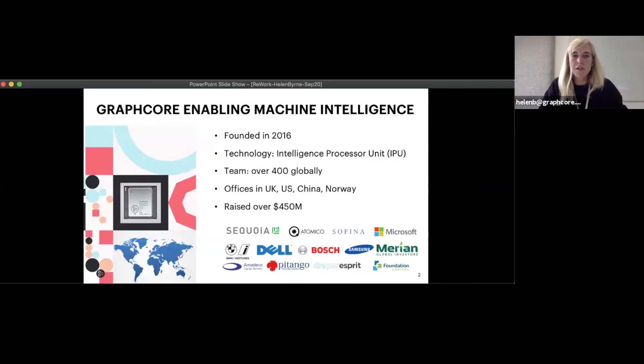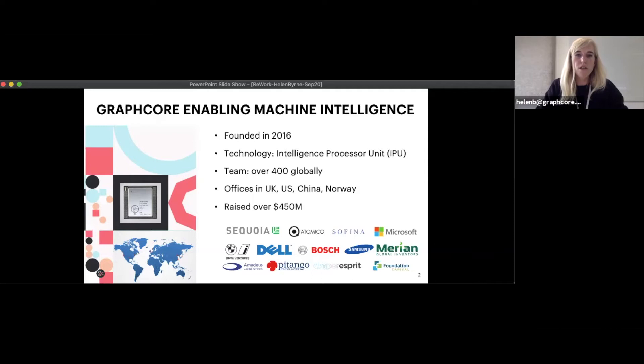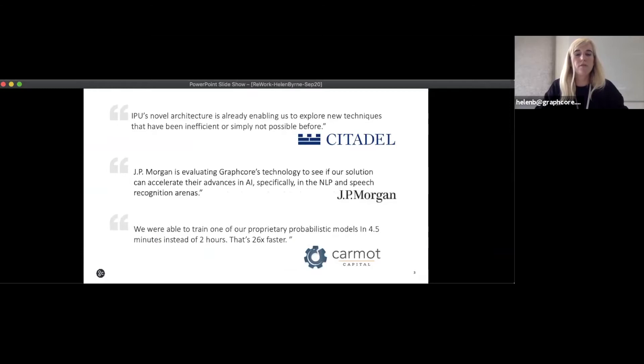So first of all, who is Graphcore? We were founded in 2016 and we've developed a new processor called the Intelligence Processing Unit. We have a team of over 400 people globally and we've raised over $450 million so far from the investors you see on the slide. We also have great financial customers, including Carmot Capital, who have been able to train one of their probabilistic models 26 times faster than they could on GPUs.